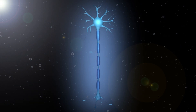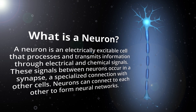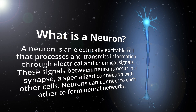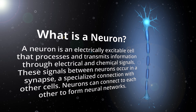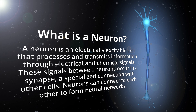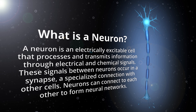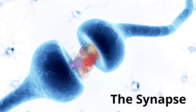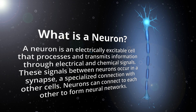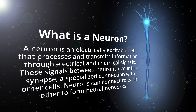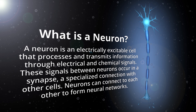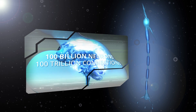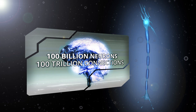To better understand the brain, let's take a deeper look into what the brain is made of. A neuron is an electrically excitable cell that processes and transmits information through electrical and chemical signals. These signals between neurons occur in a synapse, a specialized connection with other cells. Neurons can connect to each other to form neural networks. The adult human brain can have up to 100 billion neurons wired up through 100 trillion connections.